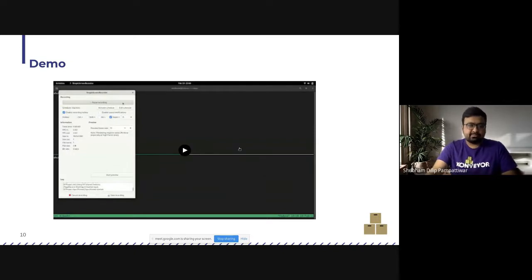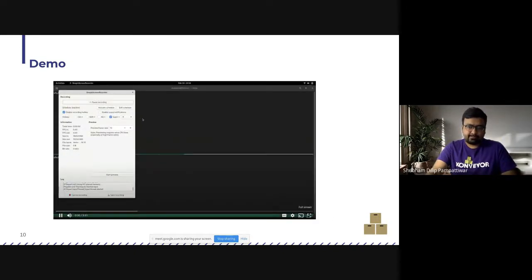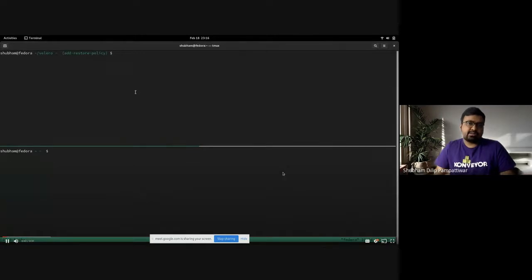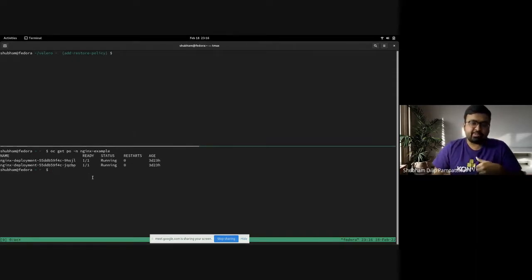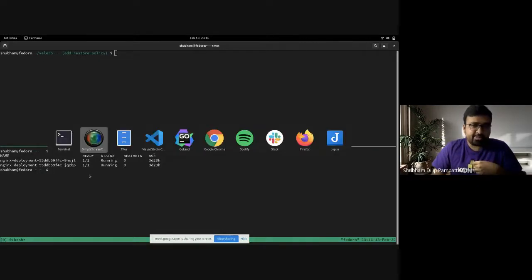I have a quick demo, short demo, just showcasing the implementation of the design. So let's have a look at it. In this example, we'll be considering Nginx deployment. So we'll create a backup. Then we'll make some changes in the in-cluster resource and try to override the in-cluster deployment with the one present in backup.